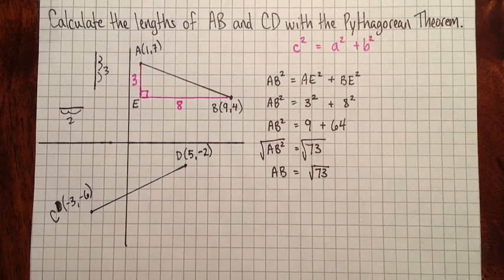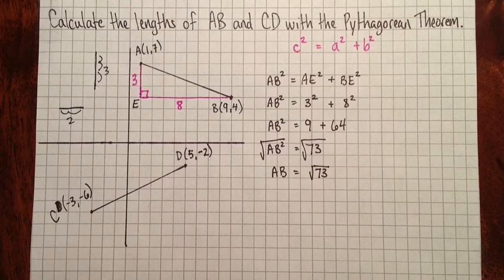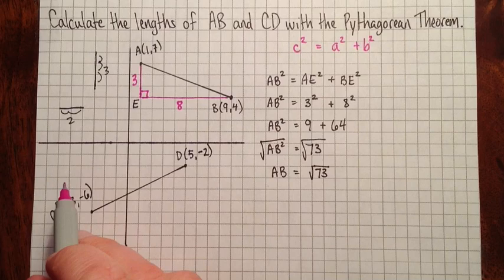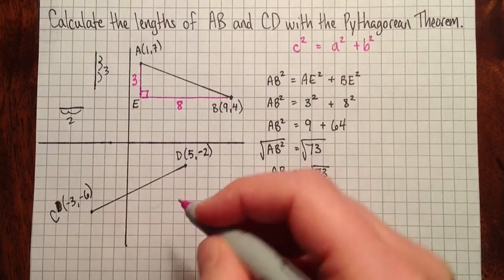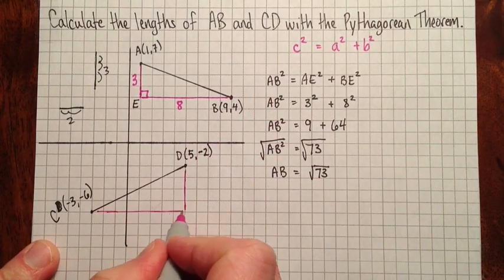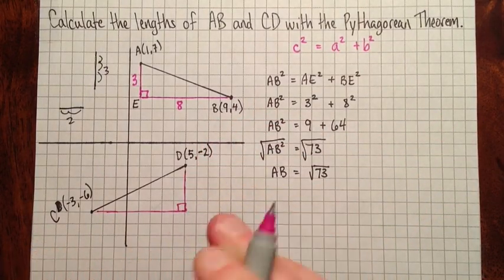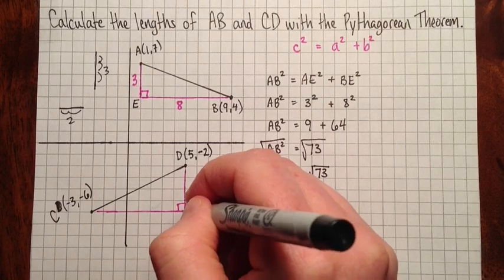Okay, let's look at the next one. So for CD, so again, we've got a diagonal line, so we can't just count squares. But we can draw a right triangle. We can either draw it up this way. But just because my paper is a little bit crowded up there, I'm going to draw it down this way here. And I'll call that point in the corner, I'll call that F.